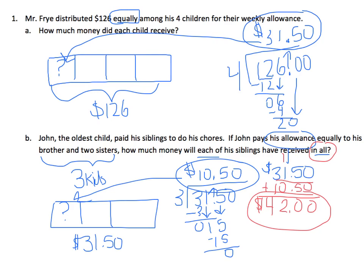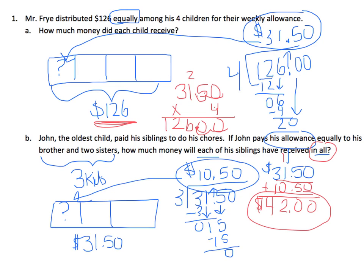If you're not sure, you can always check all of your work. For Part A, I figured out that each of the four children receives $31.50, and the total was $126.00. To check: four times zero is zero, four times five is 20, four times one is four plus two is six, four times three is 12. Count two decimal places — $126.00. It works!